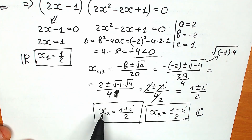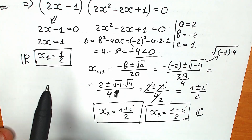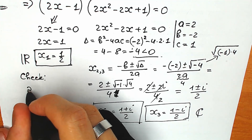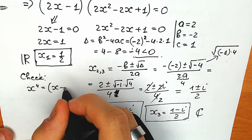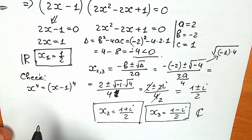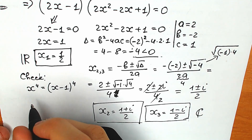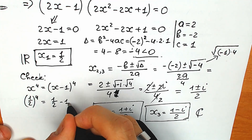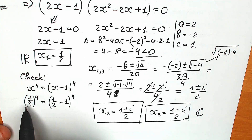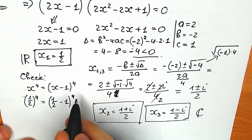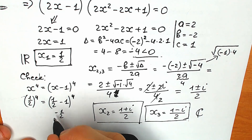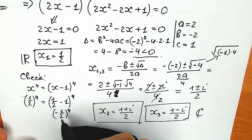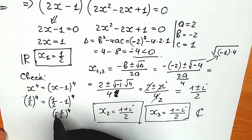We have x₁ as a real number root and two complex roots. Let's quickly verify x₁ equals one half in the original equation: one half to the power 4 equals one half minus 1 to the power 4. The right side gives minus one half to the fourth power. With an even power, the negative sign is eliminated.